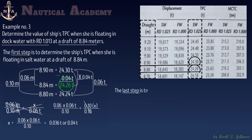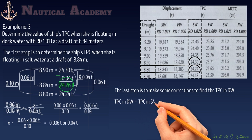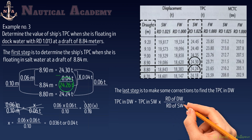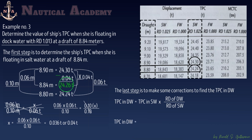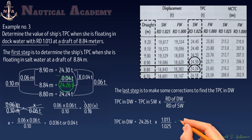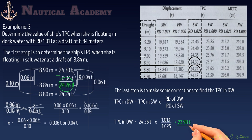The second and final step is to apply the dock water correction. The formula is: TPC in dock water equals TPC in salt water times relative density of dock water divided by relative density of salt water. So TPC equals 24.26 tons times 1.013 divided by 1.025, which equals 23.98 tons. The ship's TPC at 8.84 meters in dock water with relative density 1.013 is 23.98 tons.